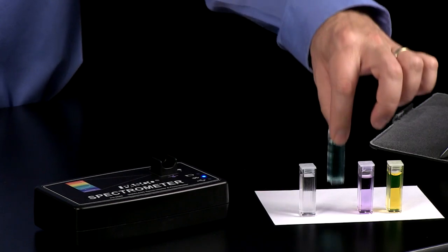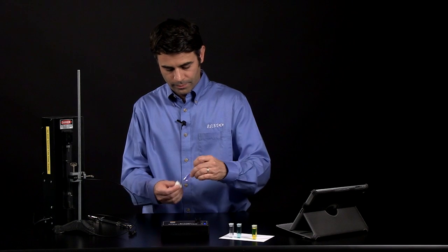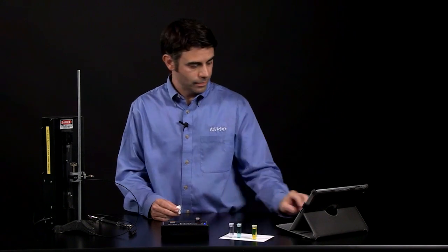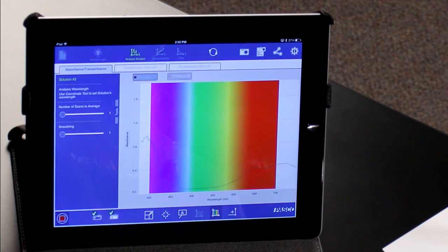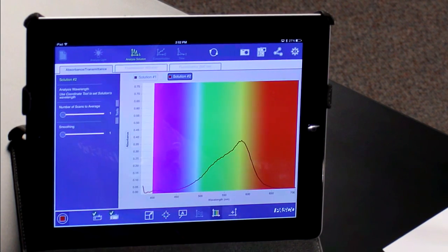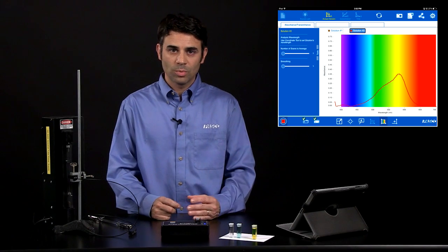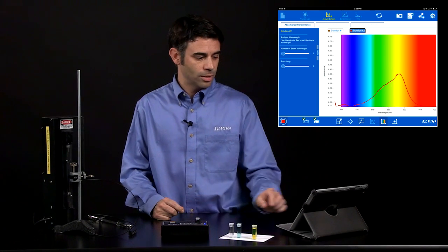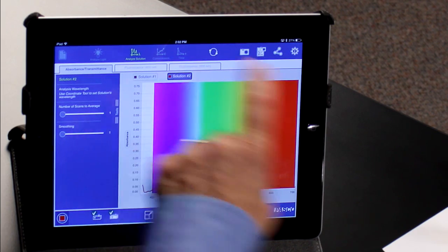We'll put another one in and start. And here is crystal violet. Now if you want to do more studies, which we'll show you in later videos, like concentration and time experiments, then you're going to want to set a wavelength to do those studies.